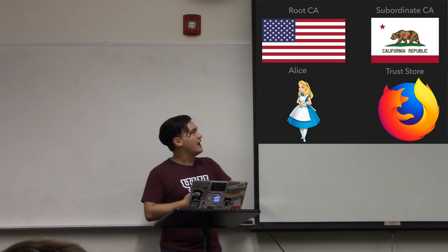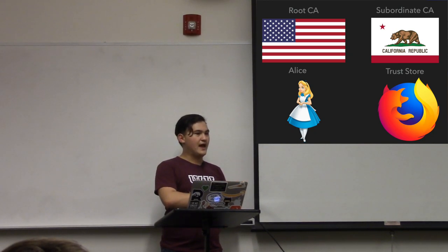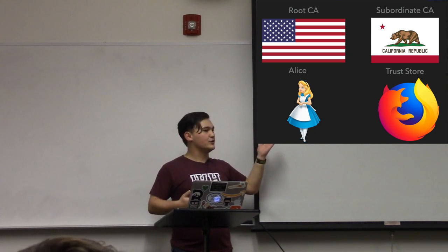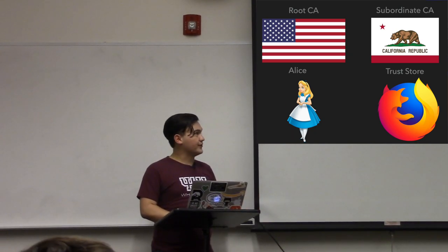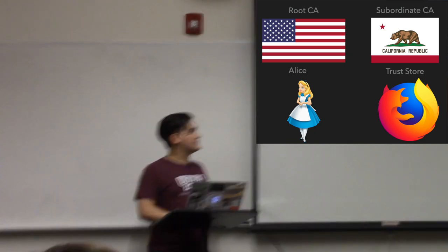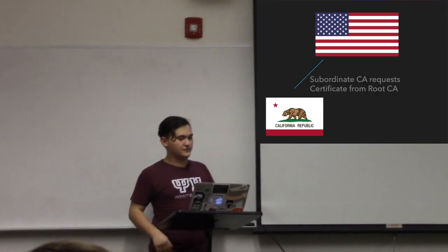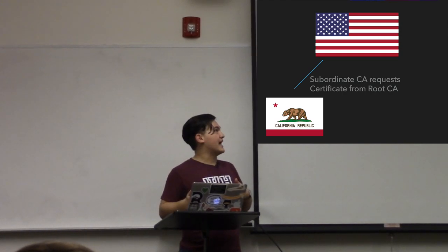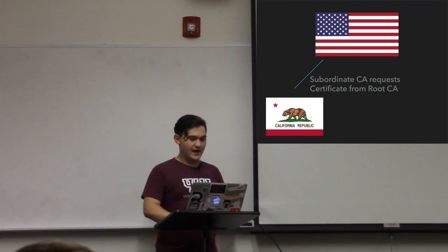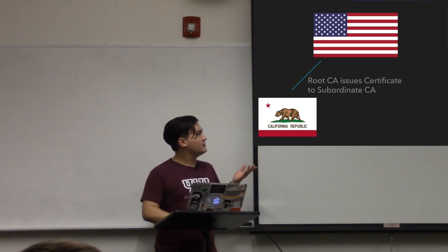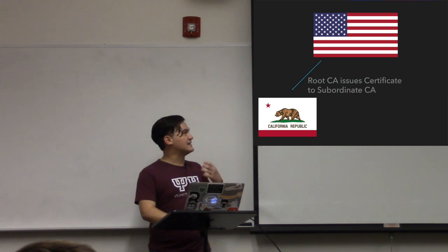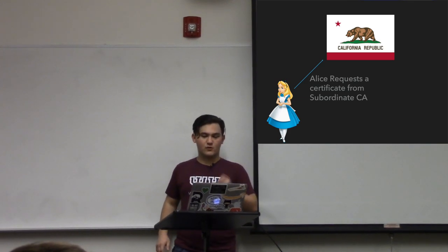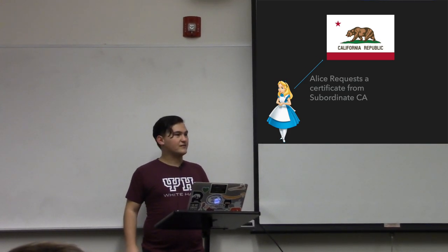Then you have a subordinate CA — they act as an interface between the root and whoever actually owns the certificate. And then you have Alice, who in this case will be our service owner, for instance the whitehat.club. So first, way before Alice even gets involved, the subordinate CA goes to the root CA and requests a certificate. After the root CA has issued a certificate for the subordinate CA, some time passes, and then Alice will come and make a request for a certificate from the subordinate CA.